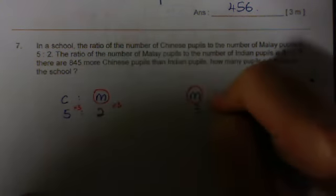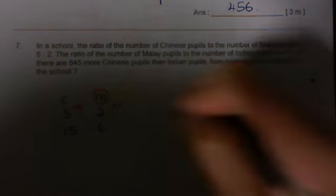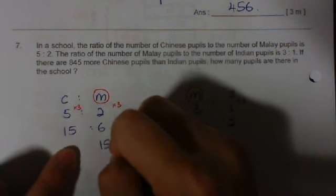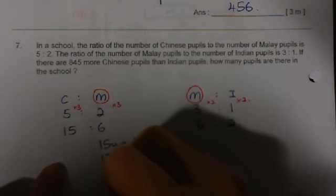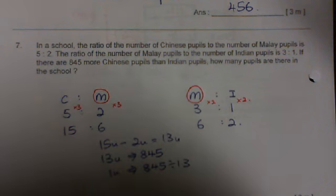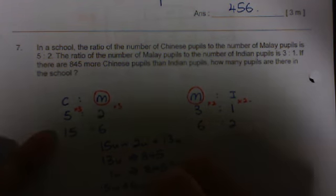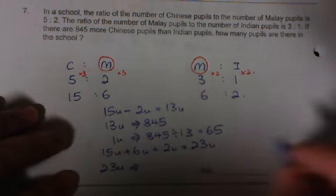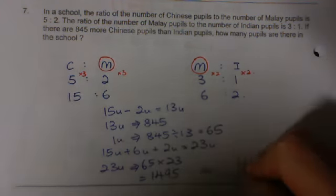In this case, I should multiply by 3 here. Multiply by 3 here. Multiply by 2. Multiply by 2. What do I get? 15 is to 6. 6 is to 2. Now, I know the difference between Chinese and Indian is this 2. So, 15U minus 2U equals 13U. 13U is represented by 845. One unit is 845 divided by 13 equals 65. Now, how many pupils are there in a school? How many units do we have? 15U plus 6U plus 2U equals 23U. So, 23U is represented by 65 times 23 equals 1495. So, 1495.